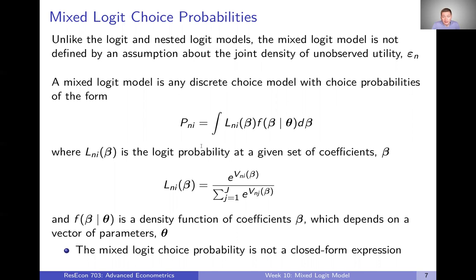As we talked about in the last video, the mixed logit model is going to assume that we have a distribution of coefficients in the population, and that distribution is going to be given by this F — the density of our coefficients, defined by some parameters theta. So we want to integrate over that density, taking the logit choice probability at every one of our beta coefficients. The big point here is that these choice probabilities are integrals over logit choice probabilities that don't have a closed-form expression. Because we're integrating over a density of coefficients, this choice probability does not have a closed-form expression.